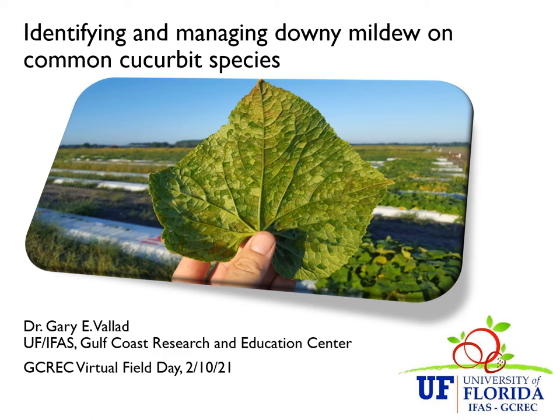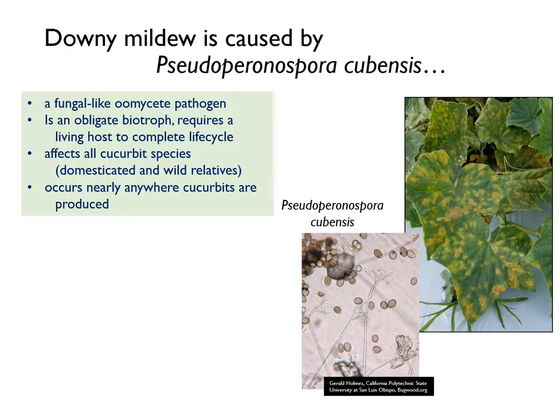Hello, I'm Gary Vallad, and today I'm going to talk about identifying downy mildew on cucurbits and give you an update on disease management. Downy mildew is caused by Pseudoperonospora cubensis, or P. cubensis for short.